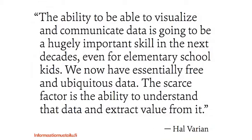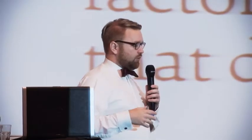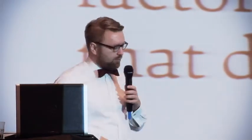Let's start with a quote from Hal Varian, who is the chief economist at Google. The point is that free data is all around us. Humanity doubles its data every year, which means every two years we produce more data than humankind has produced up to that point. The amount of data around us is amazing, so there is no lack of information. The question is how can we understand it? The scarce factor is extracting meaning and value from that huge amount of information. That is going to be a really important skill, even for school children, as Hal Varian says.